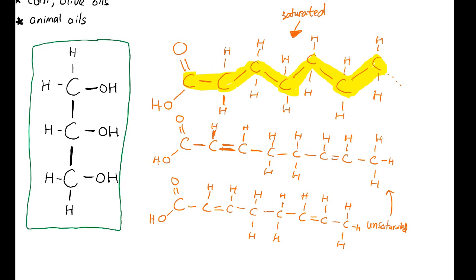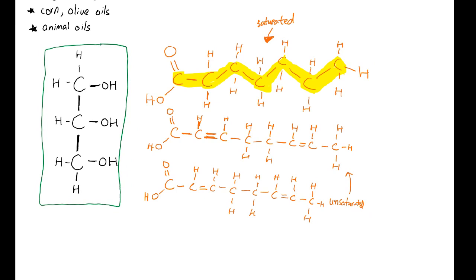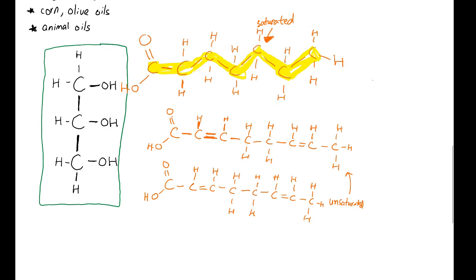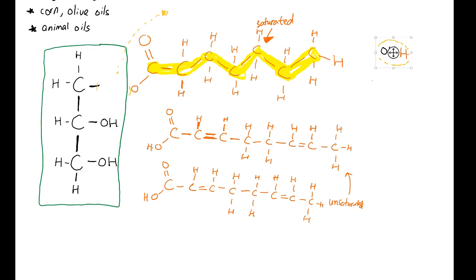Now we're going to perform a dehydration synthesis. I'm going to move the fatty acids closer to the glycerol so that the hydroxyl groups can touch each other. You can see that a water molecule can be taken out from the glycerol and the fatty acid. I take the H and the OH out and move them away — that forms water. When the water is removed, I form a covalent bond between the carbon and the oxygen.